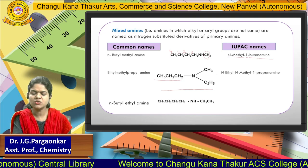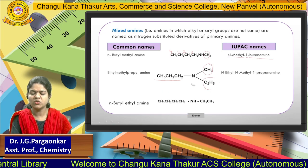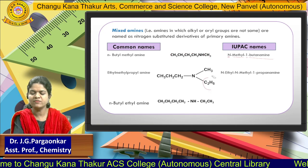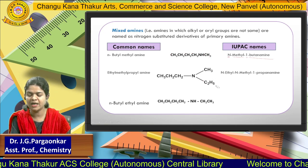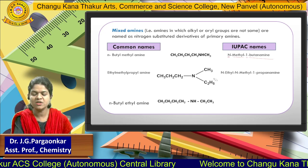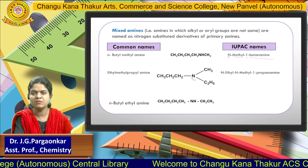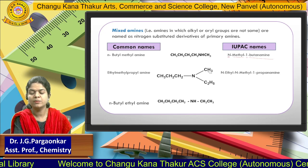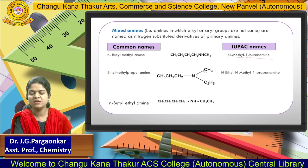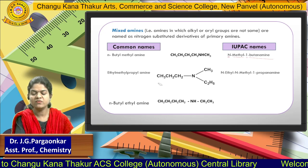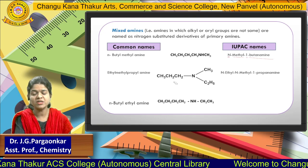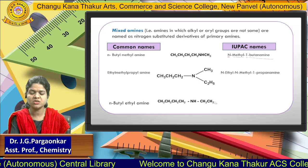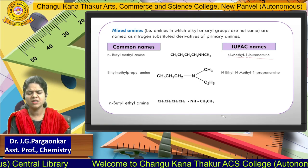For the next structure, the main chain is identified, and the two other groups act as substituents. Alphabetically, ethyl comes first, so we write N-ethyl — N means nitrogen-substituted — then N-methyl, and the main chain is propan-1-amine. So the IUPAC name is N-ethyl-N-methyl-1-propanamine.